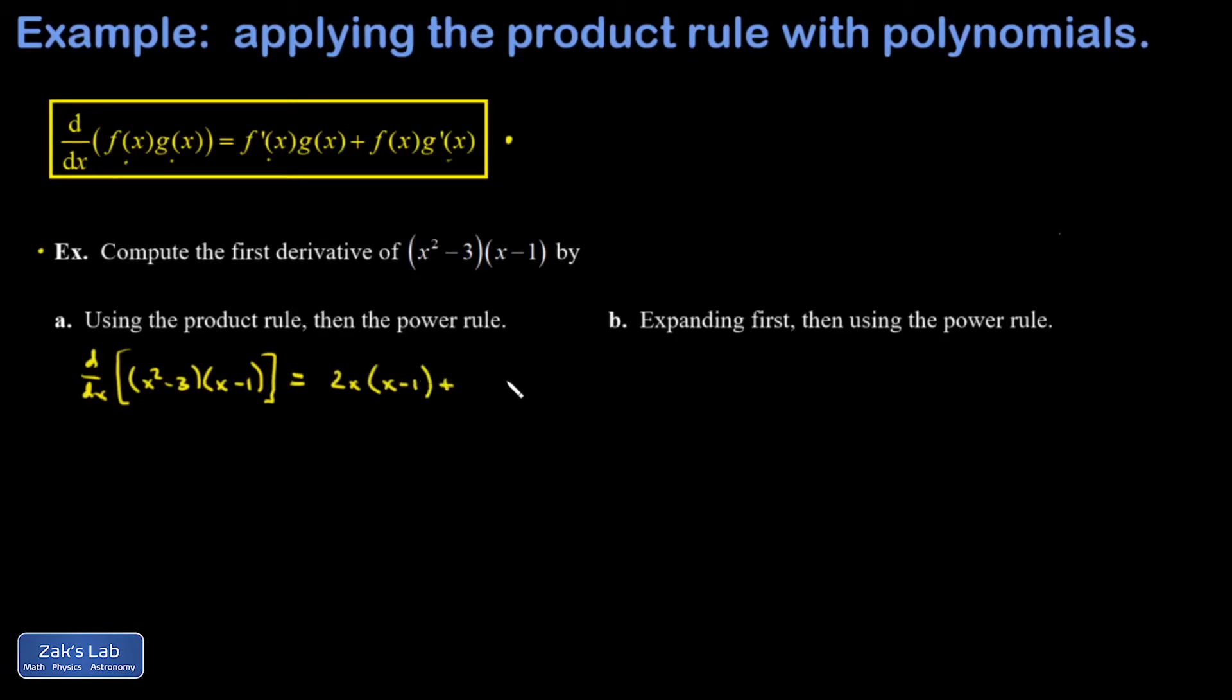And the second function, we're leaving alone. And then I add to this another term where the first function is left alone, and the second one is differentiated. So the derivative of x minus 1 is just 1. Then I can go ahead and find like terms and simplify. So I get 2x squared minus 2x when I distribute across the first one, plus x squared minus 3, and that gives me 3x squared minus 2x minus 3.